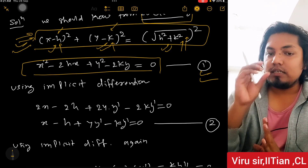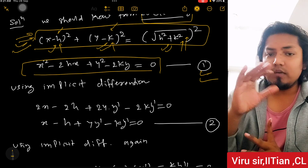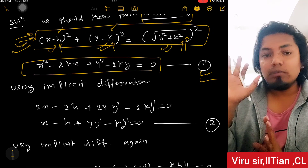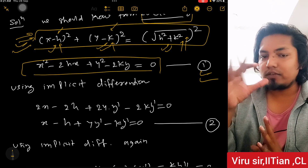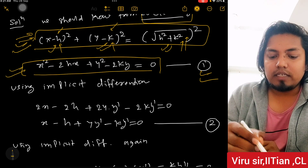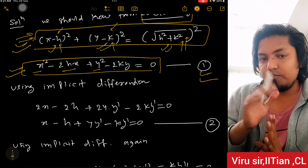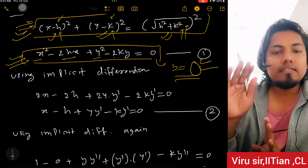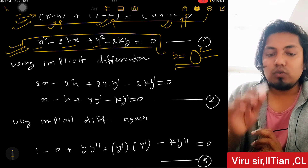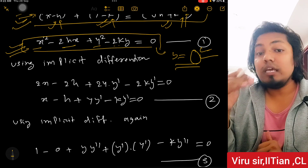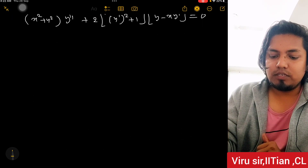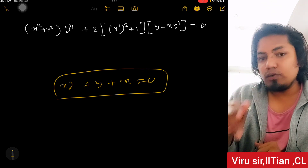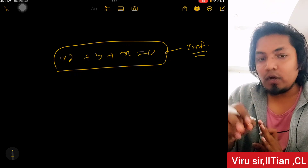Implicit means the x and y terms are mixed together; explicit means y is written as y = something. Here the equation has x², -2hx, y², -2ky all mixed, so it's implicit. When we differentiate such equations we use implicit differentiation — whenever x and y appear together apply the product rule (u·v rule), and h and k being constants differentiate to zero.